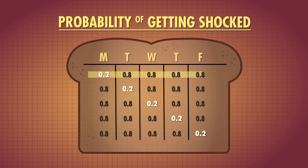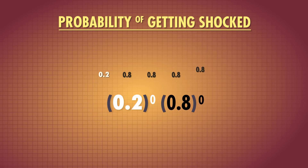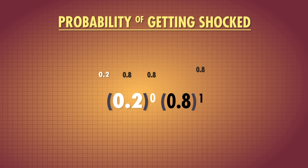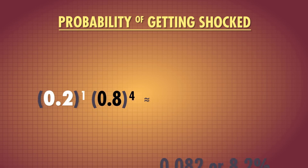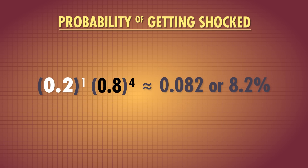In our toast example, we first figured out the probability of only getting shocked once by multiplying each day's probability together. We can use exponents to make this formula shorter — combining all the 0.2s and all the 0.8s — giving us about 8%. Notice that the two exponents add up to 5, the total number of days. This formula works for finding the chance of getting shocked only once, but we can also use it to find the chance of getting shocked another number of times.